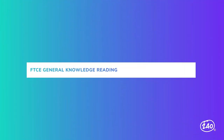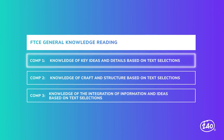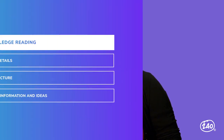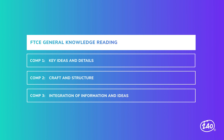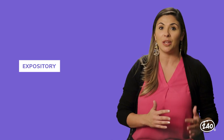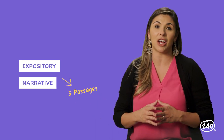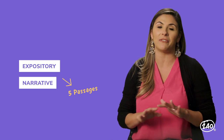The GK Reading Subtest consists of three competencies: knowledge of key ideas and details based on text selections, knowledge of craft and structure based on text selections, and knowledge of the integration of information and ideas based on text selections. There are about 40 multiple choice questions on the subtest in all, and they're all based on reading passages. The passages will be both expository, which is meant to explain, and narrative, which tells a story. There will be approximately five passages on the exam.